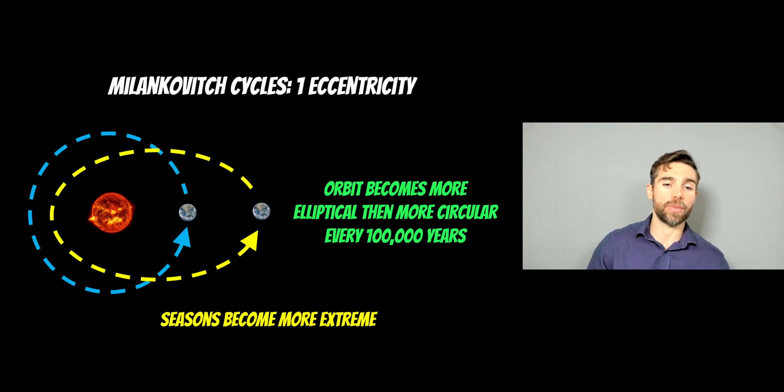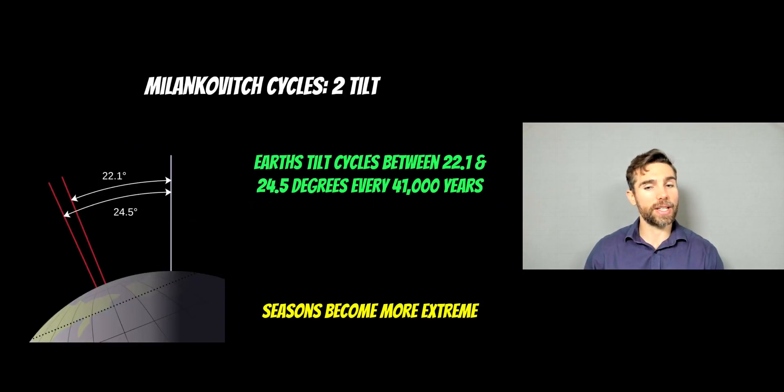Then they become less extreme and it cycles about every 100,000 years. The next one is the tilt of Earth's rotation. And that cycles between about 22.1 and 24.5 degrees. And that's about every 41,000 years. It cycles between that. And again, it has the effect that it's going to make seasons a little bit more extreme and then less extreme, because if you tilt the Earth more or less, it alters how your seasons work. That's essentially where our seasons come from anyway. So if you make it more tilted and less tilted, it's going to make them more and less extreme.